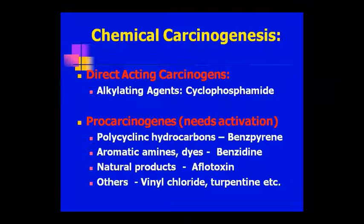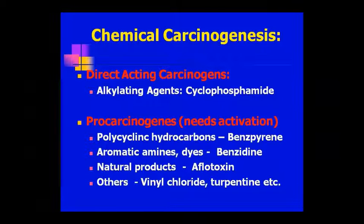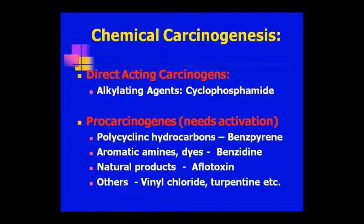Chemical carcinogens — the mechanism of chemical carcinogenesis. The first type is directly acting carcinogens, which directly act. We use alkylating agents such as cyclophosphamide, which directly act as carcinogens. If you come in contact with cyclophosphamide, it is cancer-causing.